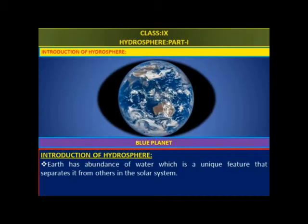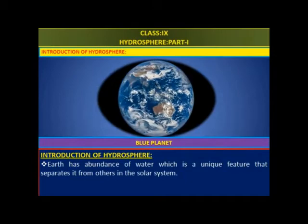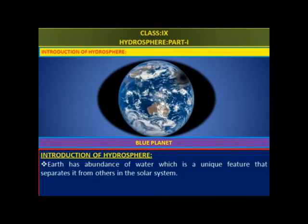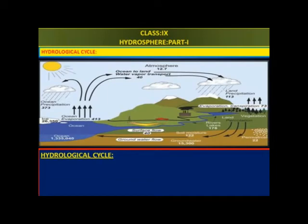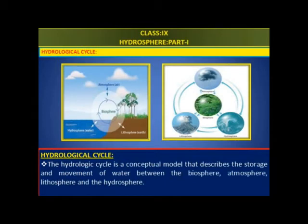About 71% of the Earth is covered with water, which is a unique feature that separates it from others in the solar system. Hence, it appears blue in photographs taken from the moon, so we call the Earth the blue planet. Now, let us go through the topic of the Hydrological cycle. The movement of water on Earth's surface and through the atmosphere is known as the Hydrological cycle. The Hydrologic cycle is a conceptual model that describes the storage and movement of water between the biosphere, atmosphere, lithosphere, and hydrosphere.